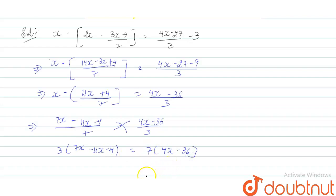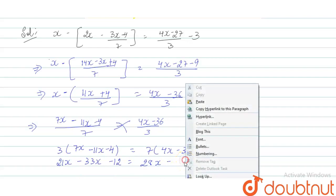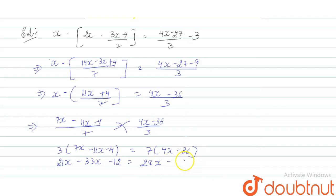So 3 times 7 is 21x, giving us 21x minus 33x minus 12 equals 28x minus 252.